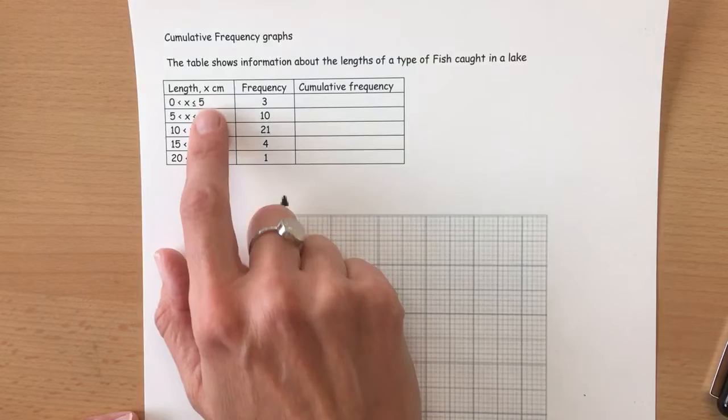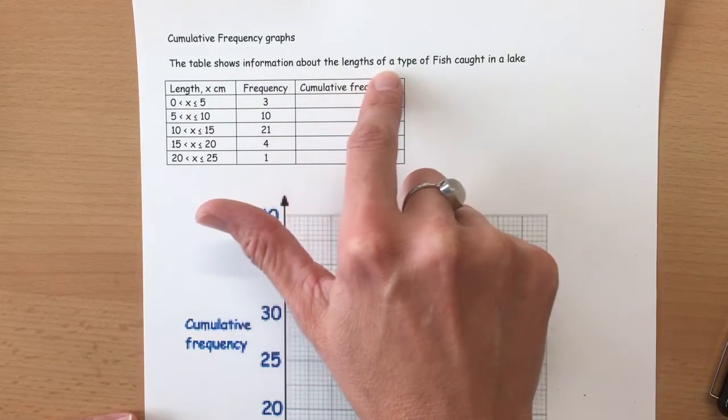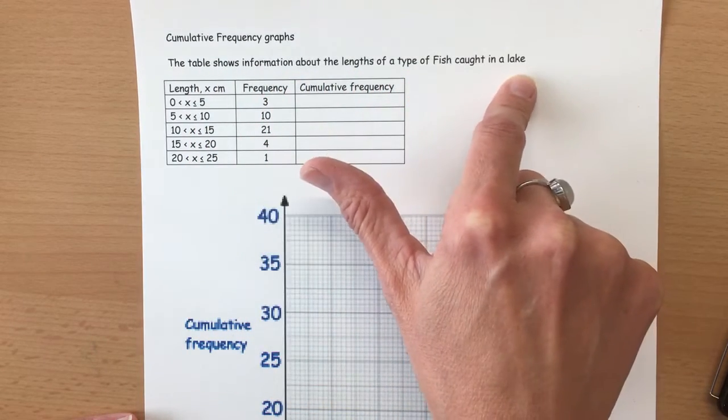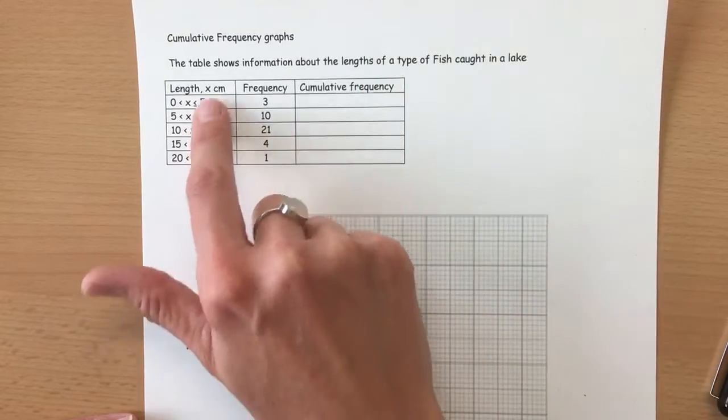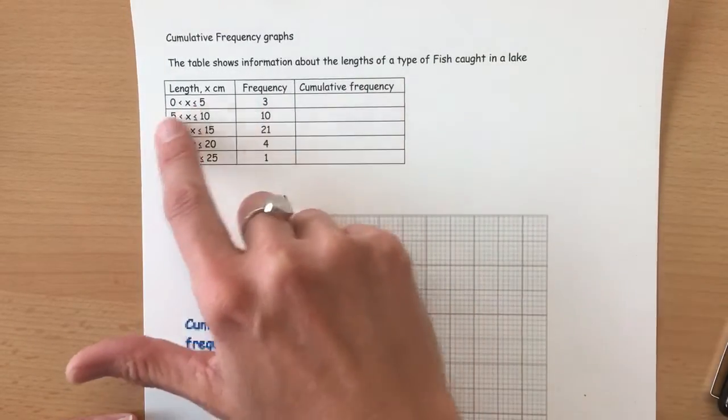This group frequency table shows information about the length of a type of fish caught in a lake. These are the lengths and these are the frequencies.